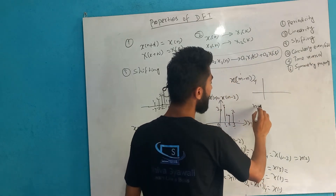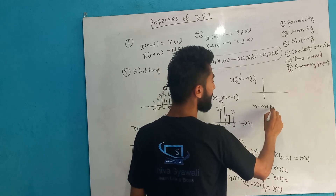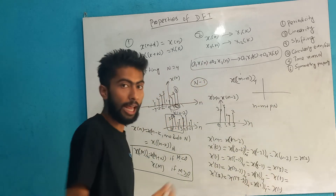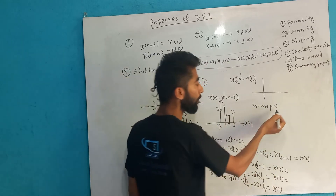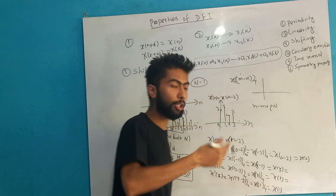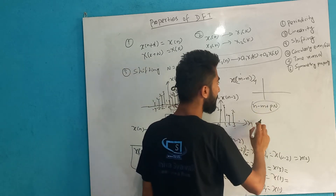If m equals n minus integer plus integer times N, this means a time period. The time period of some integer multiple — this means a time period.